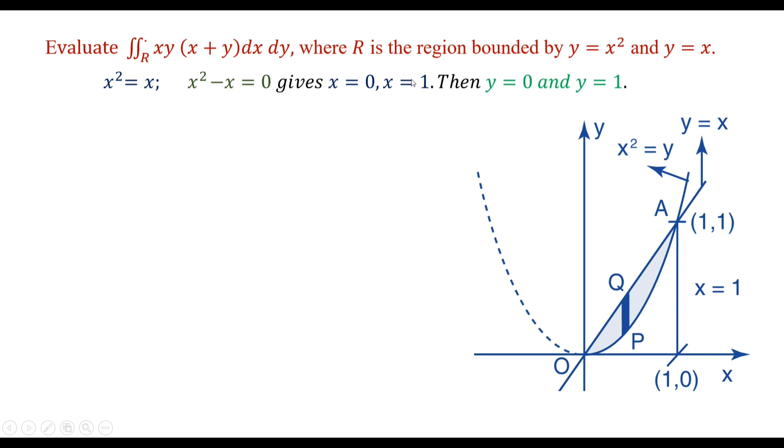Now, we substitute x equals 0 and x equals 1 back into either equation to find the corresponding y values. Thus, we get the points as (0,0) and (1,1). You can see on the region also.